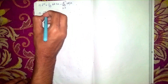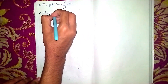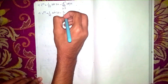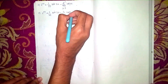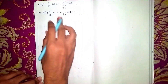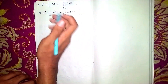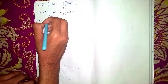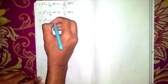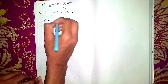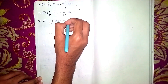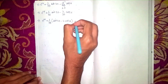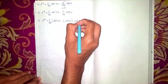Taking 1/30 as common: the particular integral PI = minus e^(2x) plus (1/30)[sin(3x) - 2cos(3x)]. This completes Step 2, the particular integral.